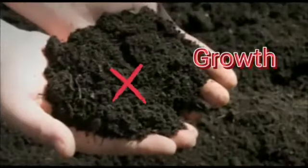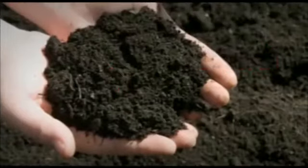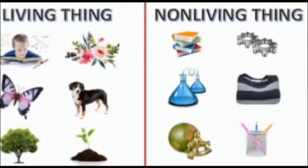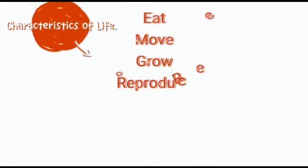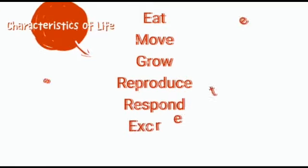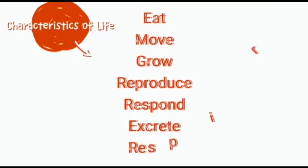Plants grow in the soil, but the soil cannot grow. So these are some characteristics which separate the things around us among living things and non-living things. Life is all about eating, moving, growing, reproducing, and also excretion, respiration, and response.